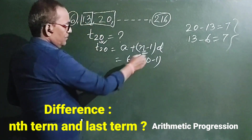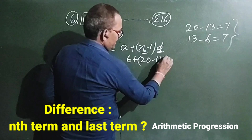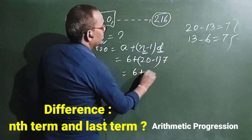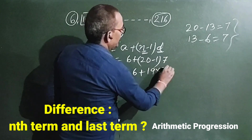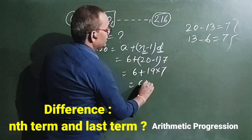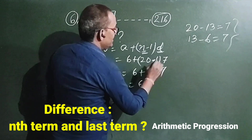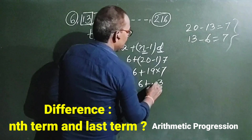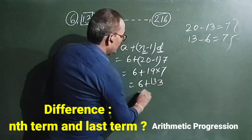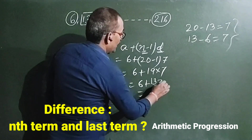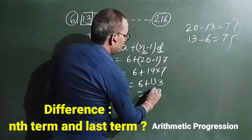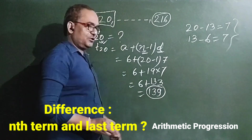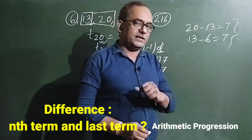Now we use D = 7. So T20 equals 6 plus 19 into 7, which equals 6 plus 133, which equals 139. So the 20th term is 139.